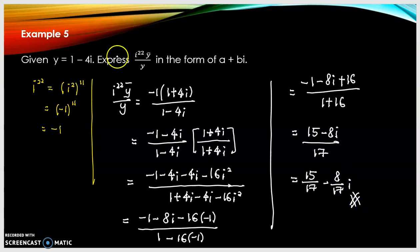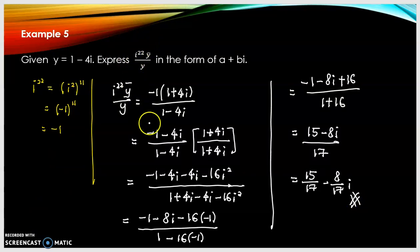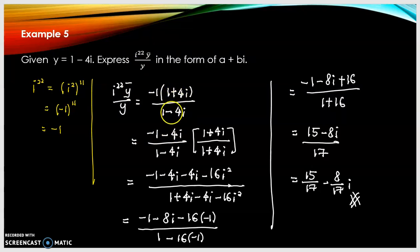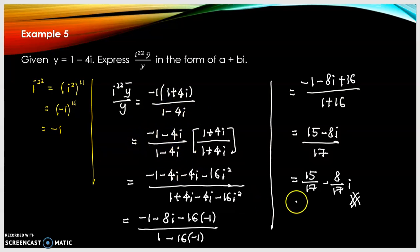To summarize: first reduce the index of i, then substitute the values of the conjugate of y and y. In order to transform the division form into standard form a plus bi, multiply by the conjugate of the denominator.